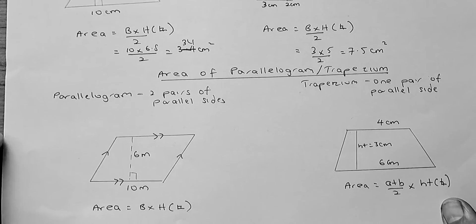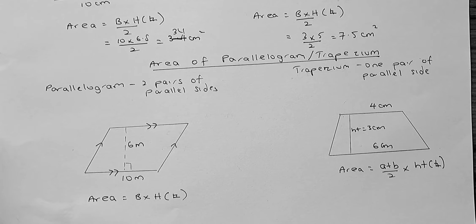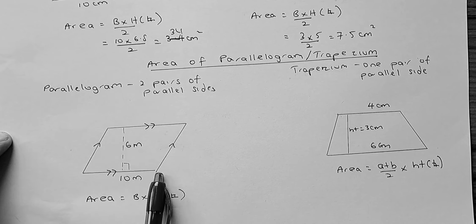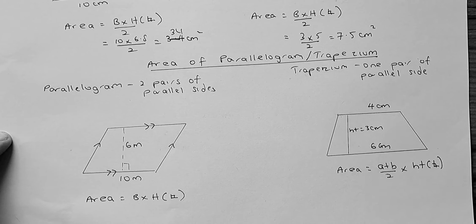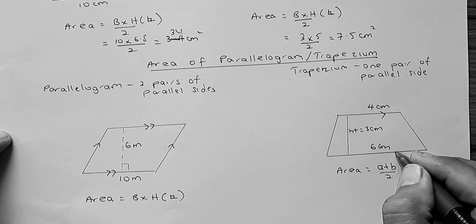Now we look at area of a parallelogram and a trapezium. The difference between a parallelogram and a trapezium is that a parallelogram has two pairs of parallel sides. So, this and this are parallel, here and here are parallel. While a trapezium has only one set of parallel lines.